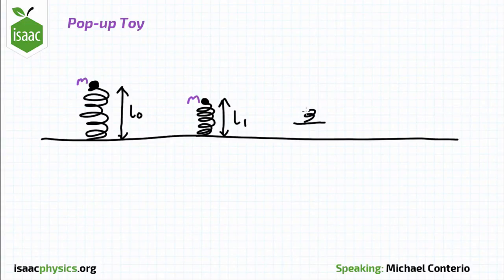In the third situation, the spring is unstretched again, but the mass is stationary at the top of the jump, and the entire thing is a distance h off the ground.